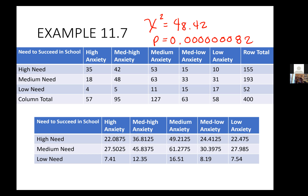When you conduct this test, you get chi-squared = 48.42 and a p-value that is extremely small. The need to succeed in school and anxiety levels are not independent of each other — one is dependent on the other. Not a big surprise. If the p is low, the null must go. So the need to succeed in school and anxiety levels are not independent.